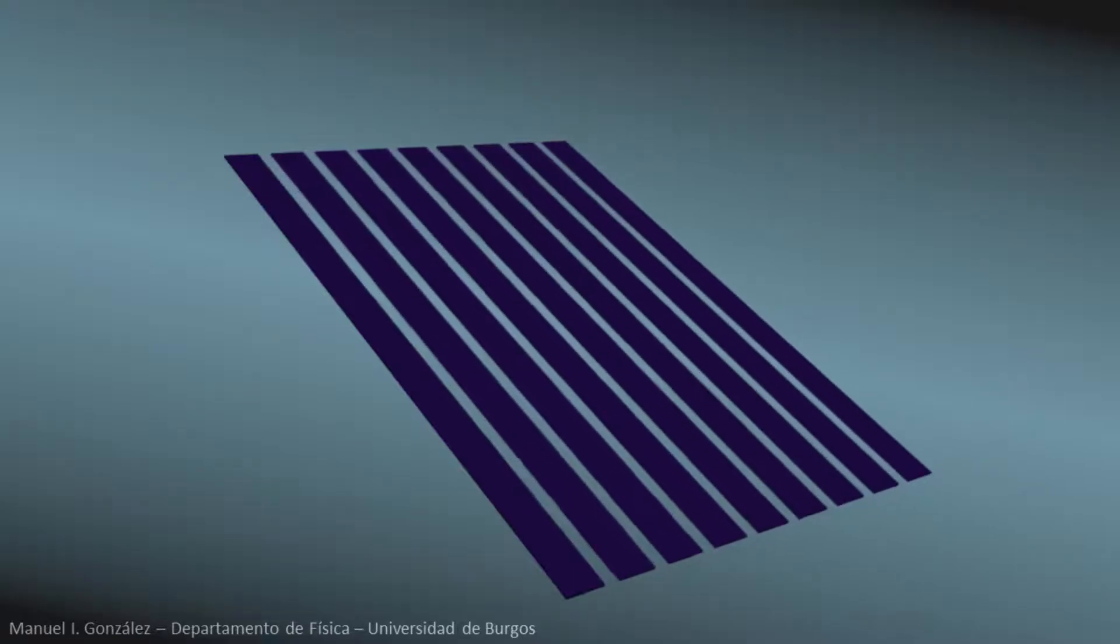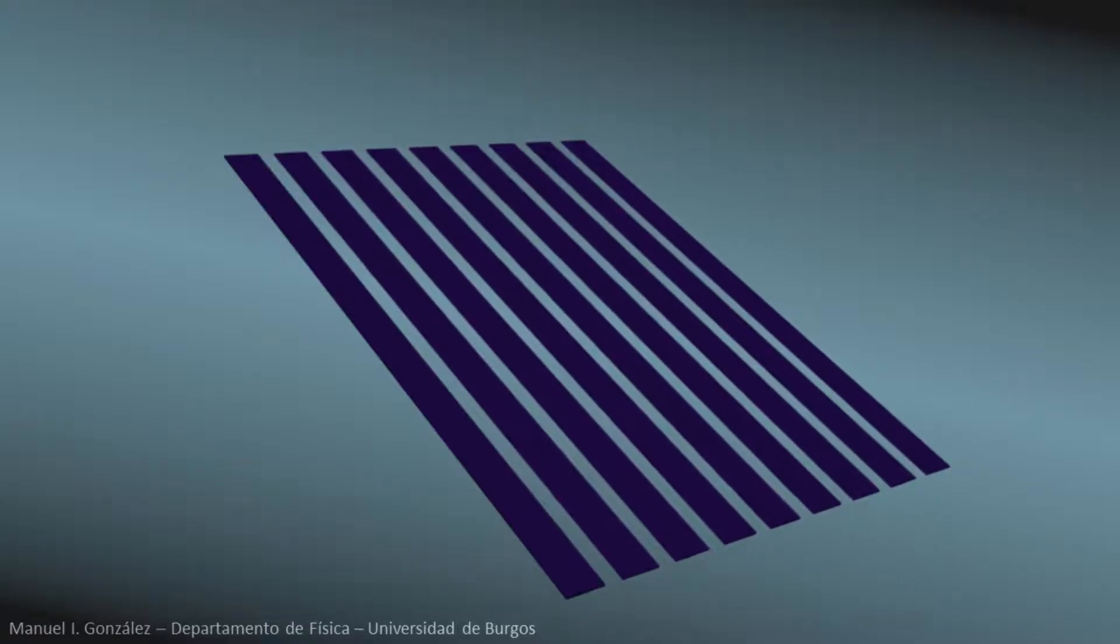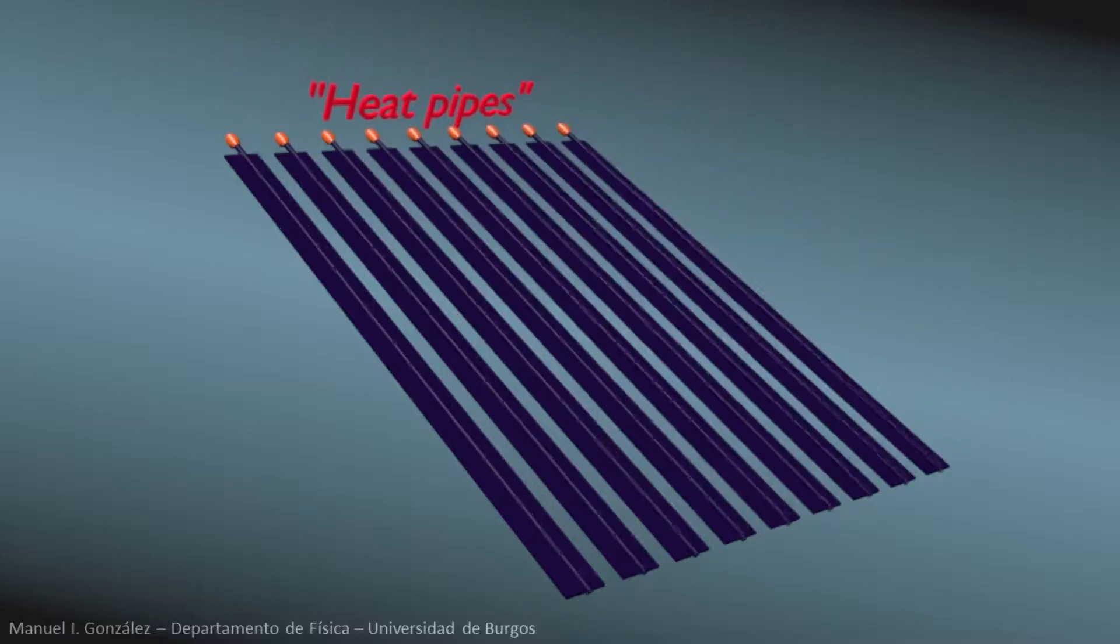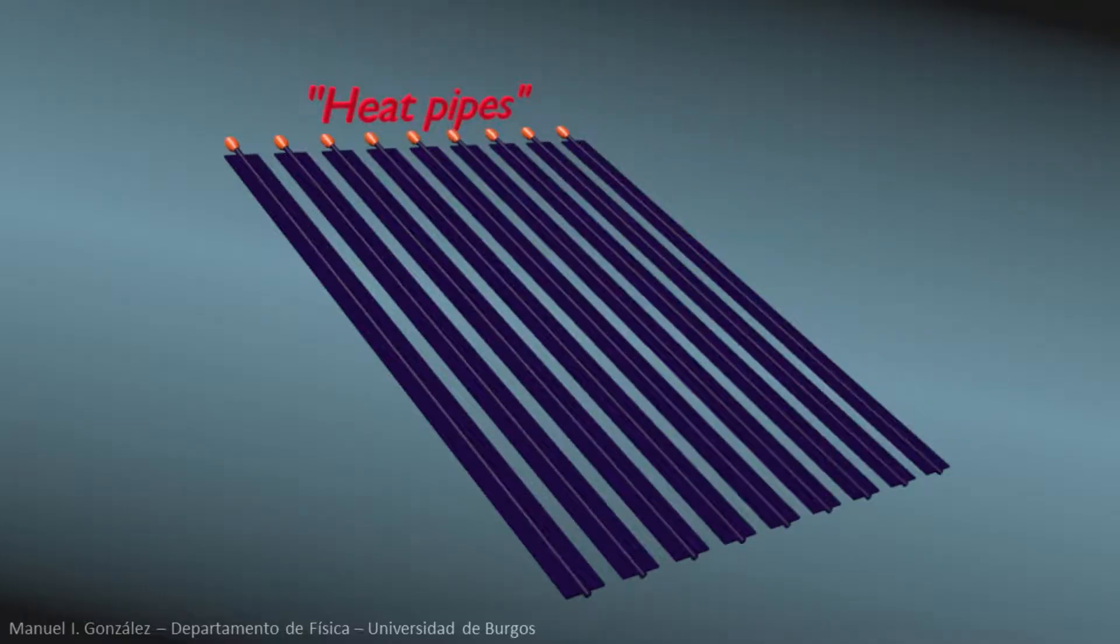However, in vacuum collectors the plate is split into parallel strips. Each strip is attached to a metallic tube in good thermal contact with it. It can be a direct flow tube or a so-called heat pipe. We will focus on the latter option.